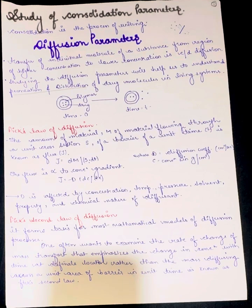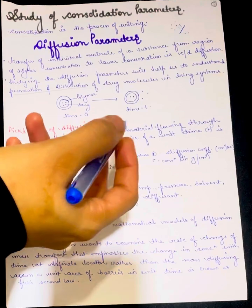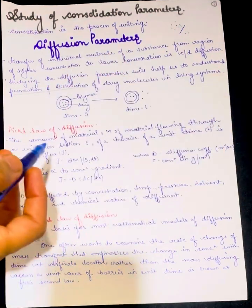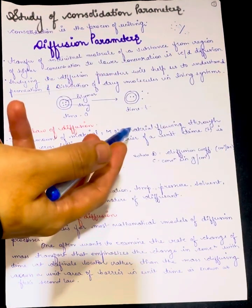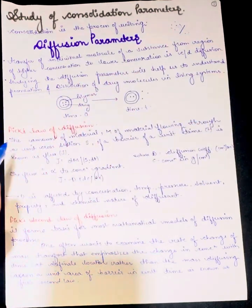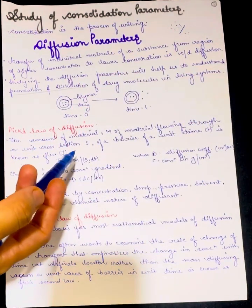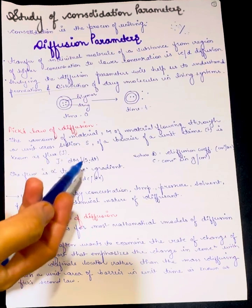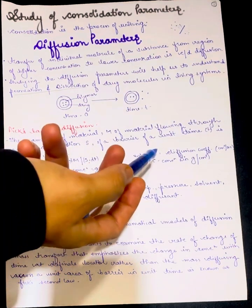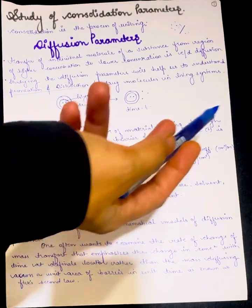Fick's first law of diffusion: the amount of material M flowing through a unit cross-section S of a barrier in unit time T is known as flux, represented by J. J equals dM upon S·dt, where D is the diffusion coefficient represented in units of centimeter squared per second.